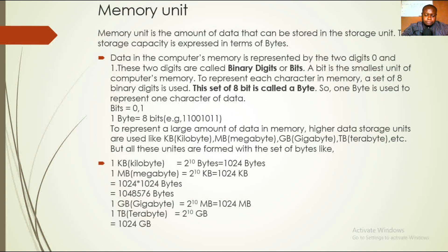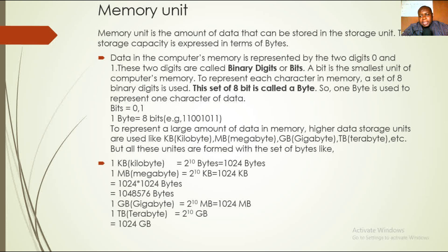A memory unit is the amount of data that can be stored in a storage unit. Its storage capacity is expressed in terms of bytes. Data in computer memory is represented by two digits — zero and one — called binary digits or bits. A bit is the smallest unit of computer memory. To represent each character in memory, a set of eight binary digits is used. This set of eight bits is called a byte, so one byte is used to represent one character of data.